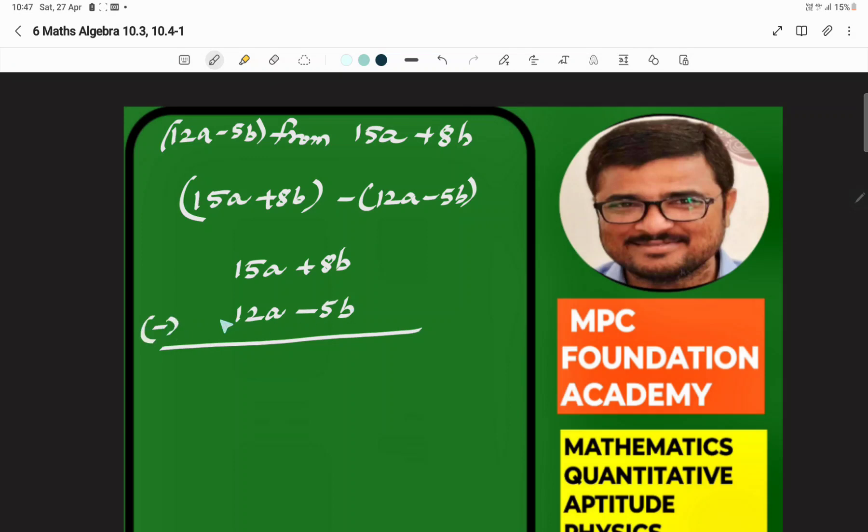When we subtract, we have to change the signs. So 15a minus 12a equals 3a, and 8b minus negative 5b becomes 8b plus 5b. We have 15a minus 12a, and 8b plus 5b.